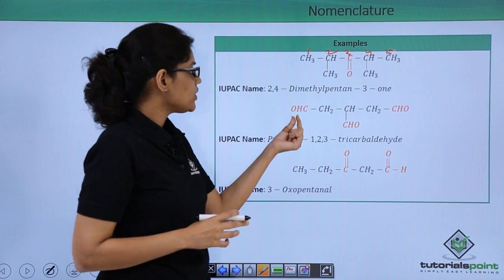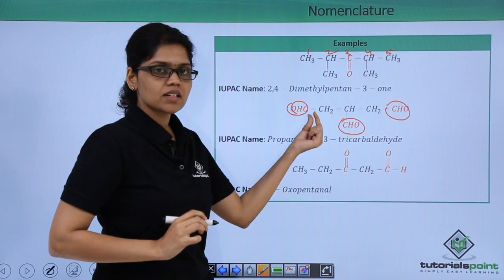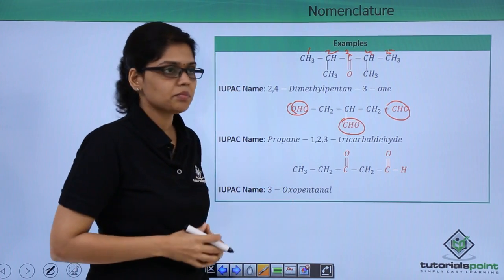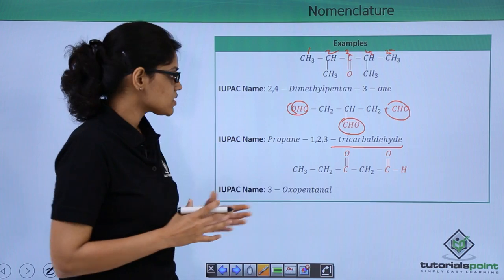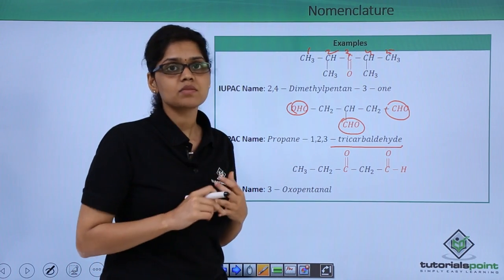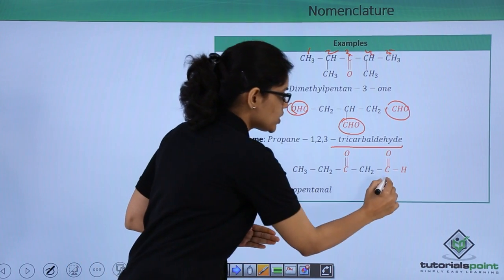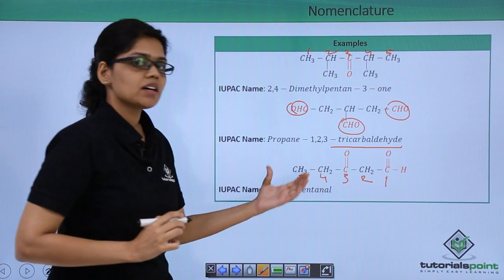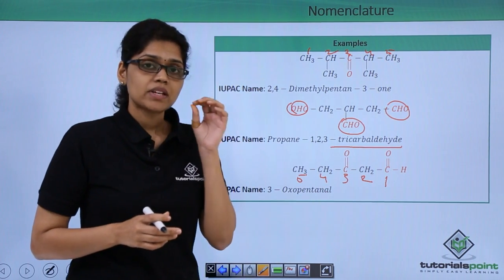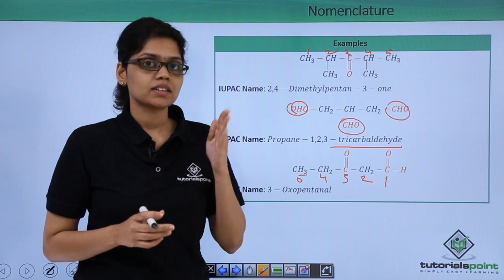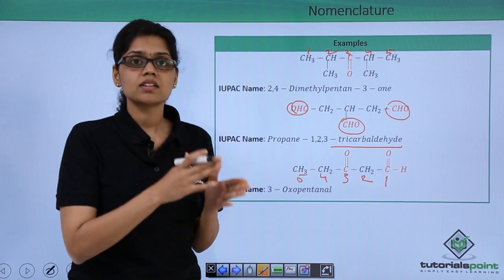The next structure has three CHO groups attached, and the main chain is propane, so the IUPAC name is propane-1,2,3-tricarbaldehyde. The last structure contains both a C=O group and an aldehyde group. Numbering starts from the carbon of the aldehyde group: 1, 2, 3, 4, and 5. When C=O acts as a substituent, it is called 'oxo', and since it is at the third carbon, the IUPAC name is 3-oxo-pentan-al.